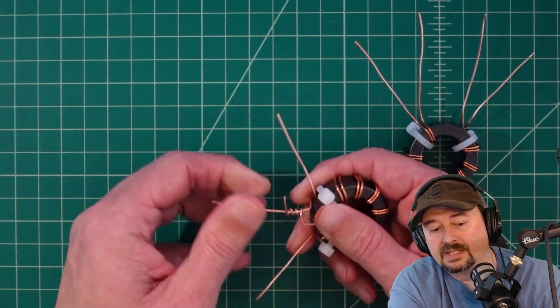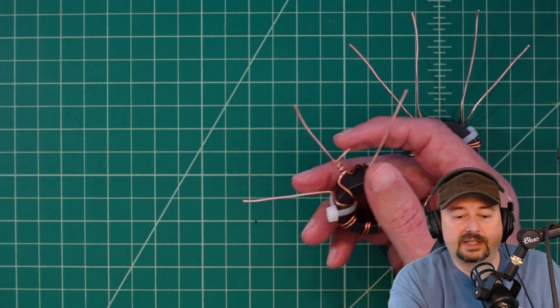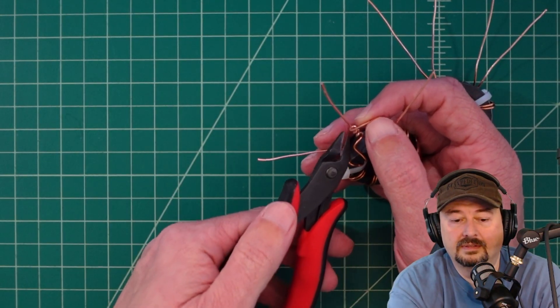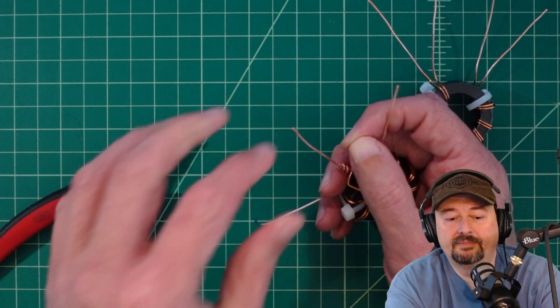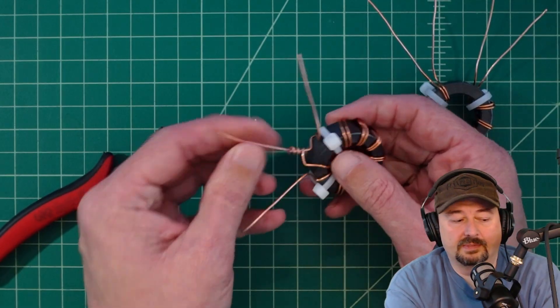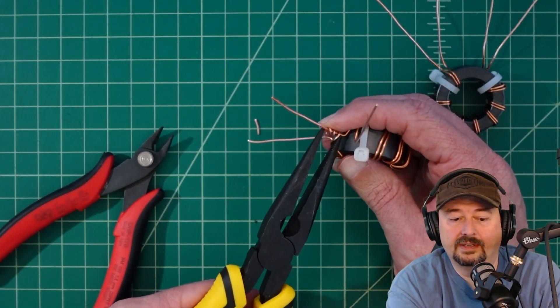Once we get a few winds on there I'm going to trim this off. Let's just do that now. There's no turning back once you do that. Now we got that trimmed off. Then I can tighten this up a little bit with a pair of needle nose.